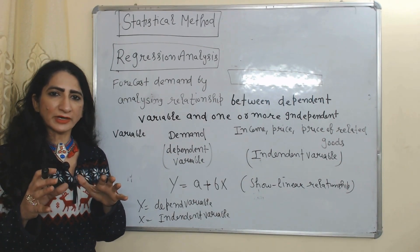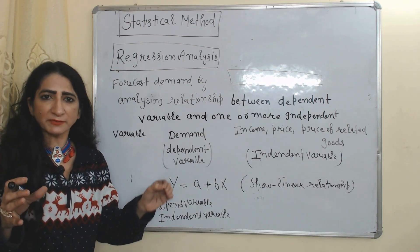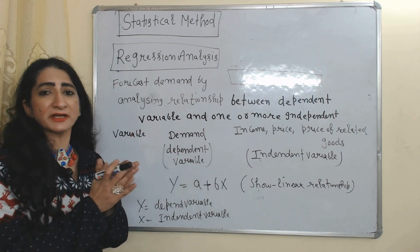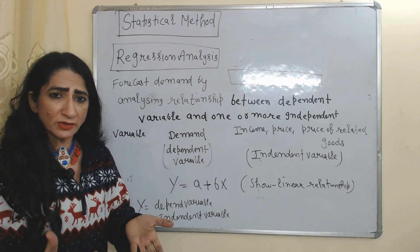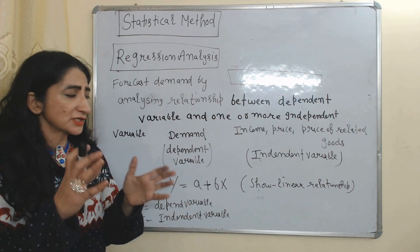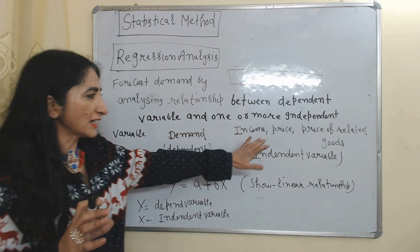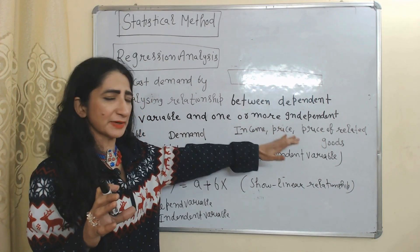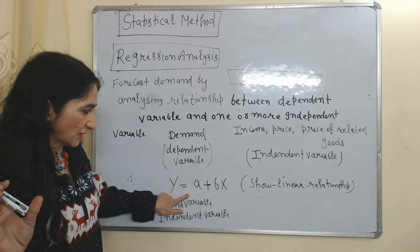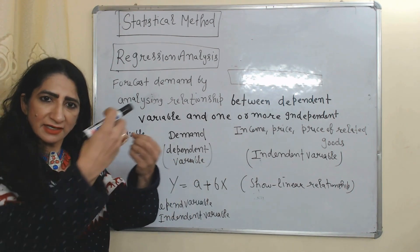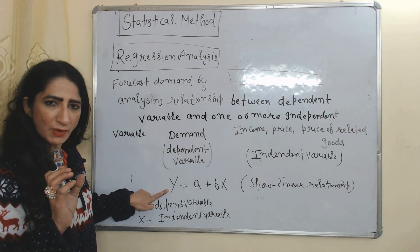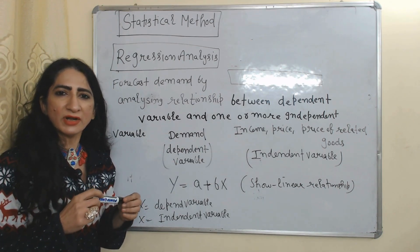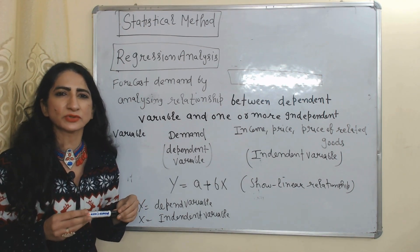The next statistical method is regression analysis. This method forecasts demand by analyzing the relationship between a dependent variable and independent variables. Our demand depends on price, income, and price of related goods — so demand is the dependent variable, while income, price, and price of related goods are the independent variables. This method tells us how much demand changes when these variables change. The equation shows a linear relationship: y is the dependent variable (quantity demanded) and x is the independent variable (income, price, or price of related goods). That's all about methods of demand forecasting — thank you for watching, bye, take care.